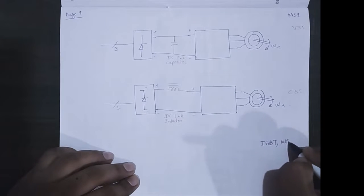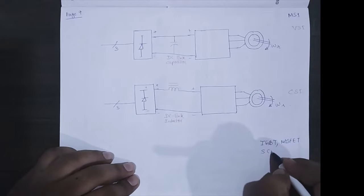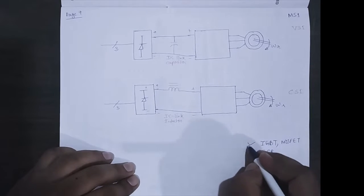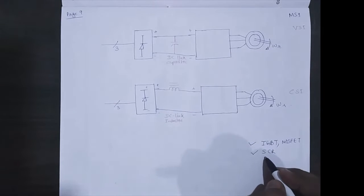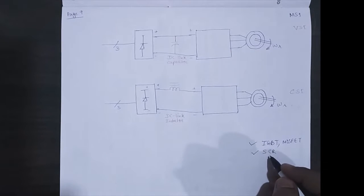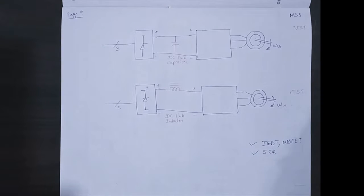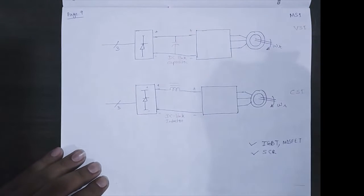This is because in VSI the voltage should be constant, and in CSI the DC link current should be kept constant. The switches that are used in an inverter are IGBT, MOSFET, SCR - the power electronic switches.